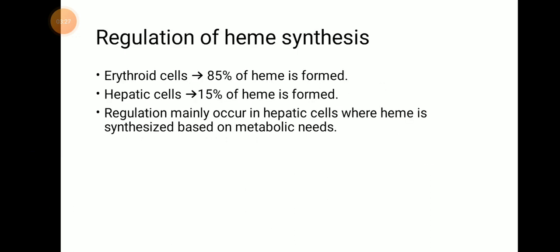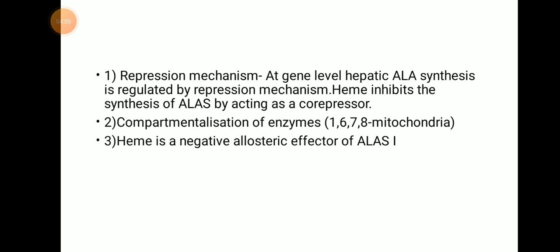Now we will move to regulation of heme synthesis. Erythroid cells synthesize 85% of heme; hepatic cells synthesize the remaining 15%. Regulation mainly occurs in hepatic cells where heme is synthesized based on metabolic needs. There are 3 levels of regulation of heme synthesis: repression mechanism, compartmentalization, and allosteric regulation.